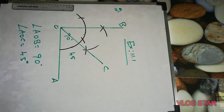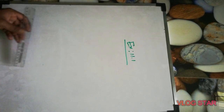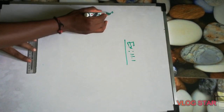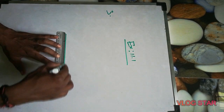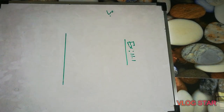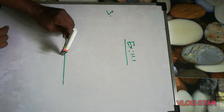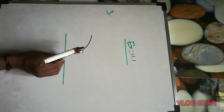This is question number two. Now we'll go to question number three. Question number three has 30 degrees, 22 and a half, and 15 degrees. First one is 30 degrees. 30 degrees means you have to make first 60 degrees. So 60 is easy — we just cut an arc one time.